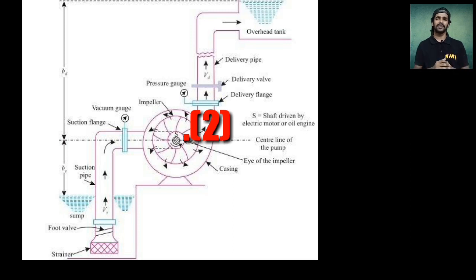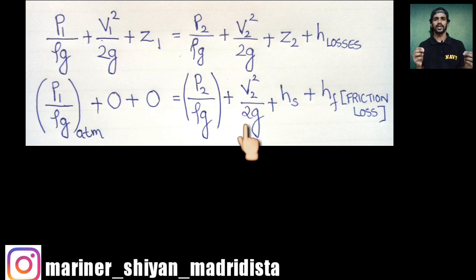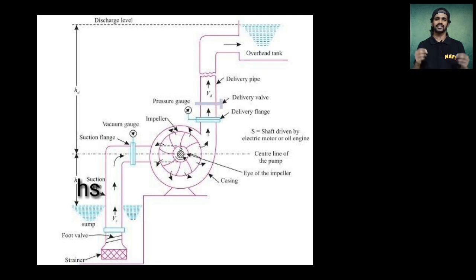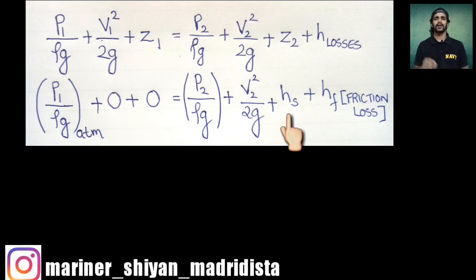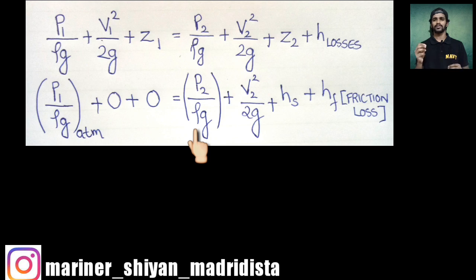On the right-hand side, considering Point 2 — the eye of the impeller — the pressure is P2/ρg. There will be a certain velocity of fluid towards the eye of the impeller, so we include V2²/2g. The suction lift from the sump towards the eye of the impeller is Hs, so Z2 = Hs. We also add friction loss, which is the dominant loss compared to eddy losses, head losses, and others — especially as flow rate increases.